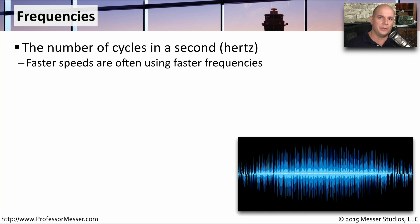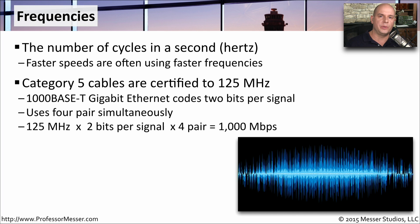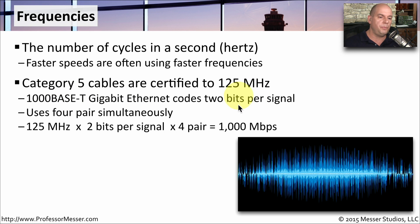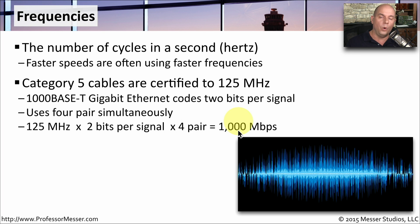One term used very often in computing is the frequency of a particular bus or the particular speeds on a network. We usually refer to these frequencies in hertz — so it might be in hertz, megahertz, or gigahertz — and it's really referring to the number of cycles that can be seen in a single second. Faster frequencies generally get faster speeds. For gigabit ethernet, we might run this over category 5 cable, which is certified for signals up to 125 megahertz. Gigabit ethernet codes two bits per signal and uses four pairs of wires to send that signal. That gives us 125 megahertz frequencies sending two bits per signal over four pairs, which gets us to the maximum of 1,000 megabits per second, or one gigabit of speed.